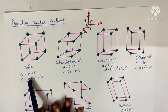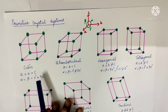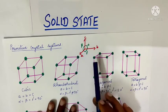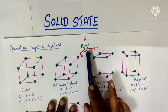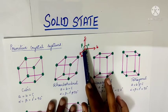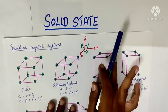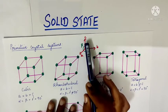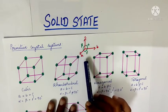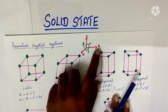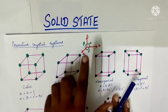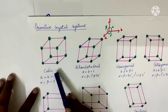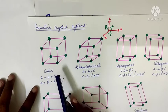Primitive unit cells are distinguished by their edge length, distance, and angles. The angle and edge length along each axis — a, b, and c — with angles alpha, beta, and gamma — are used to classify primitive unit cells.